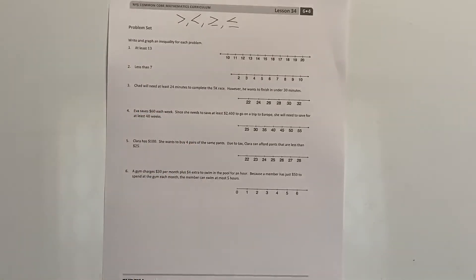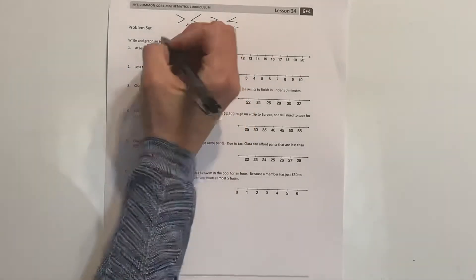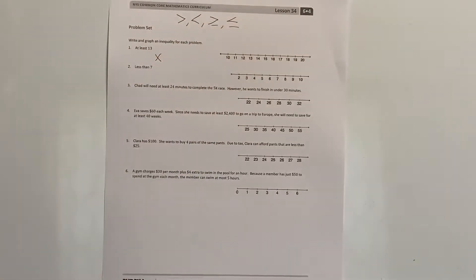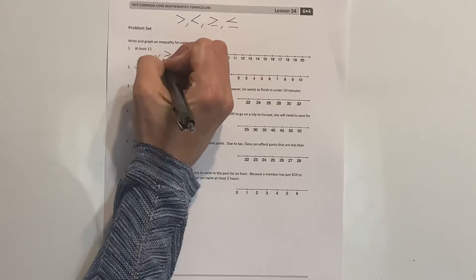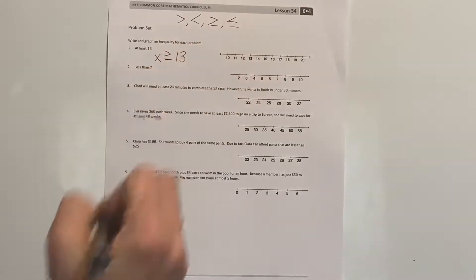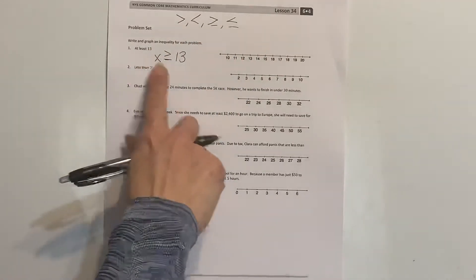At least 13. So we have an unknown that is at least 13. So is it greater than 13? Well, it could be greater, it can't be less than 13. Greater than means it's at least, so it's greater than or equal to 13.